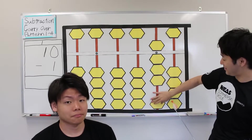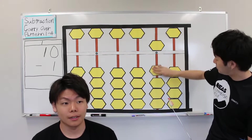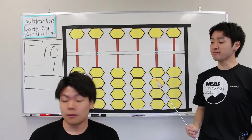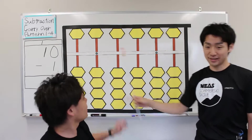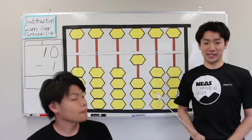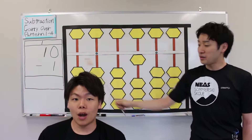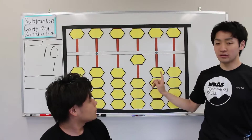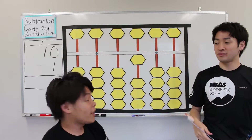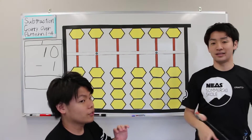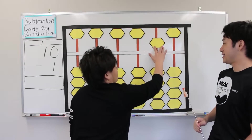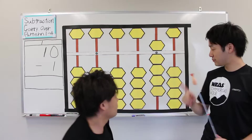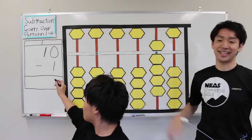Try again. Plus 10. Next, minus 1. 2, subtract 1, subtract 10, and add 9. This is subtraction carryover pattern 1. The answer is 9. That's right.